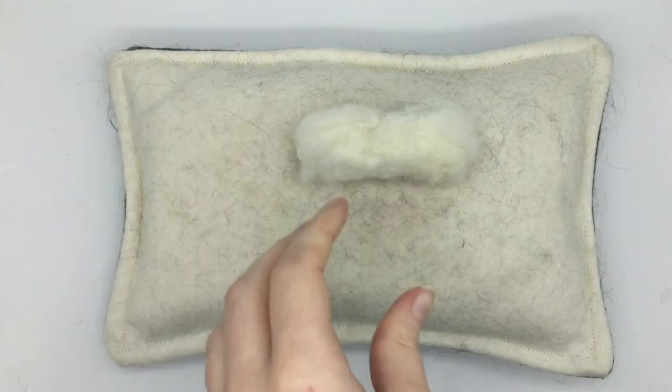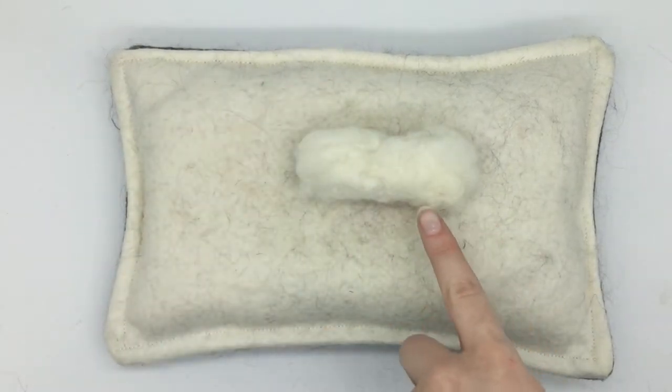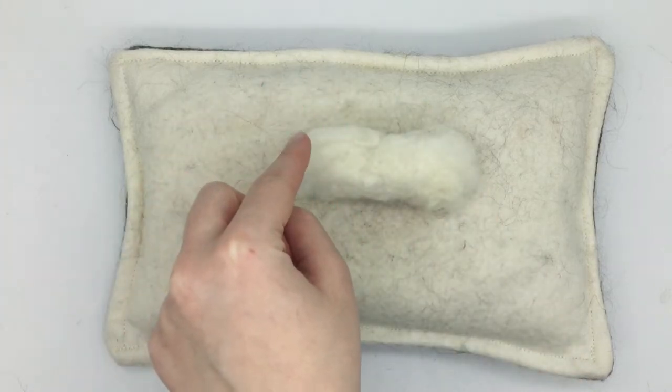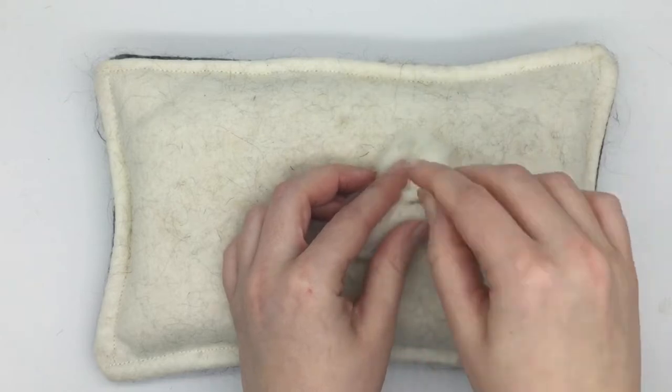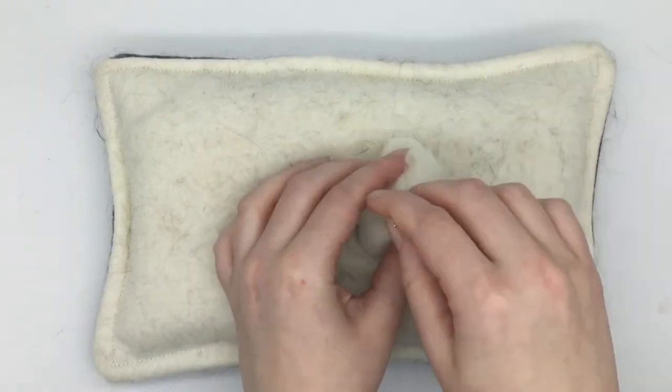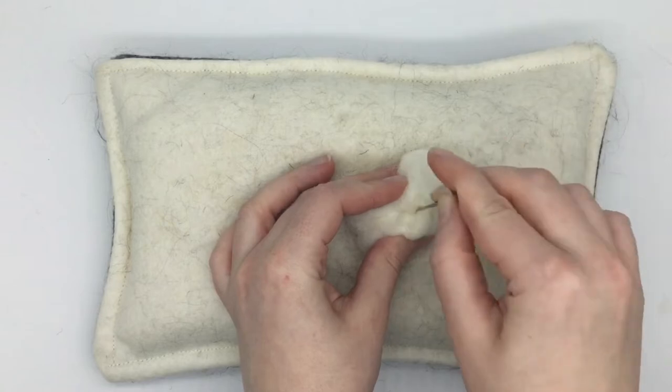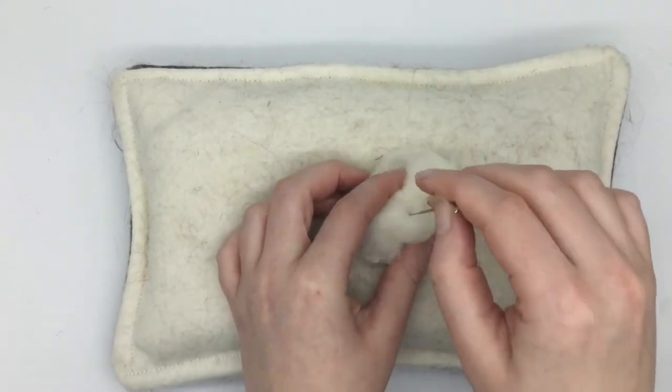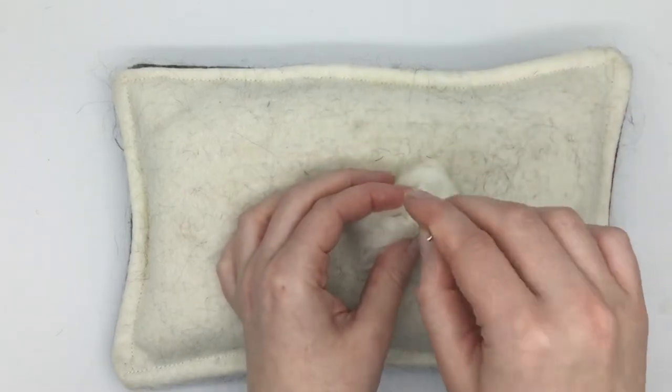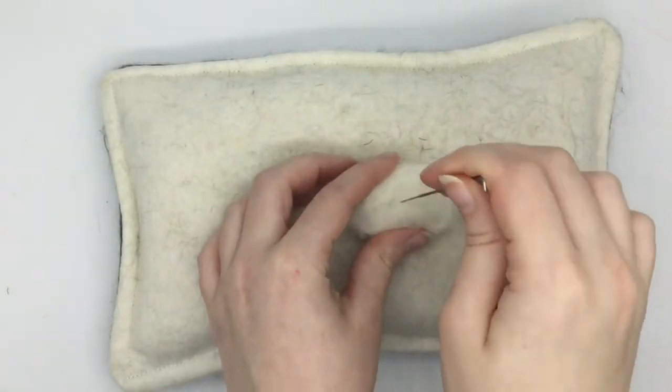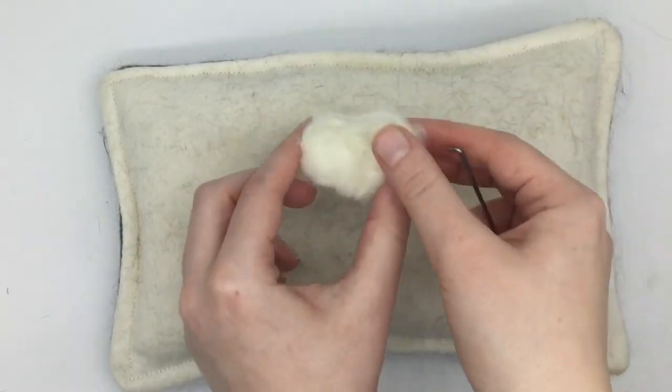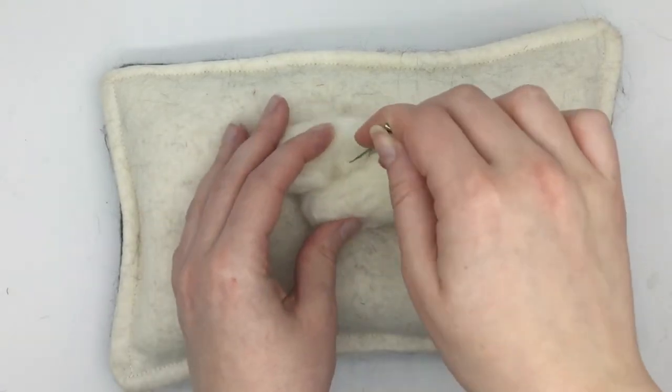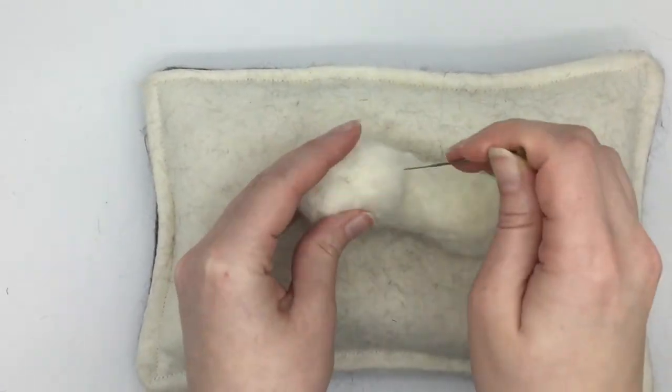And then once you've done that you should be left with something that looks like this. So now I'm going to felt the head and that will go on this side of the body. I'm getting some more core wool but a smaller amount this time and I'm just folding it into a ball shape and I'm just going to felt that so it holds its shape. And then this is what you want once you have done that. And I'm now going to felt this onto the body that I made earlier.